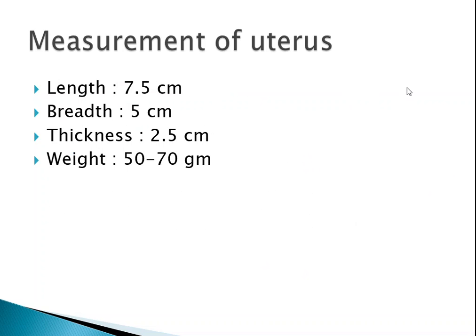Now for the measurements of the uterus — these are for the normal, non-pregnant uterus. The length is 7.5 cm, the breadth is 5 cm, the thickness is 2.5 cm, and the weight is 50 to 70 grams. These are the normal parameters of the uterus.